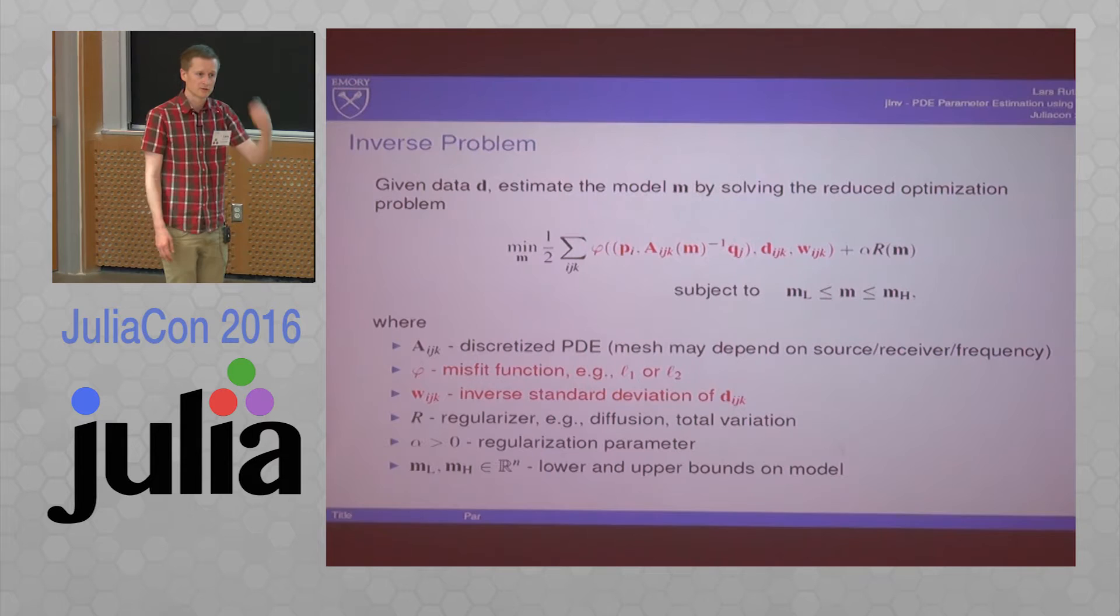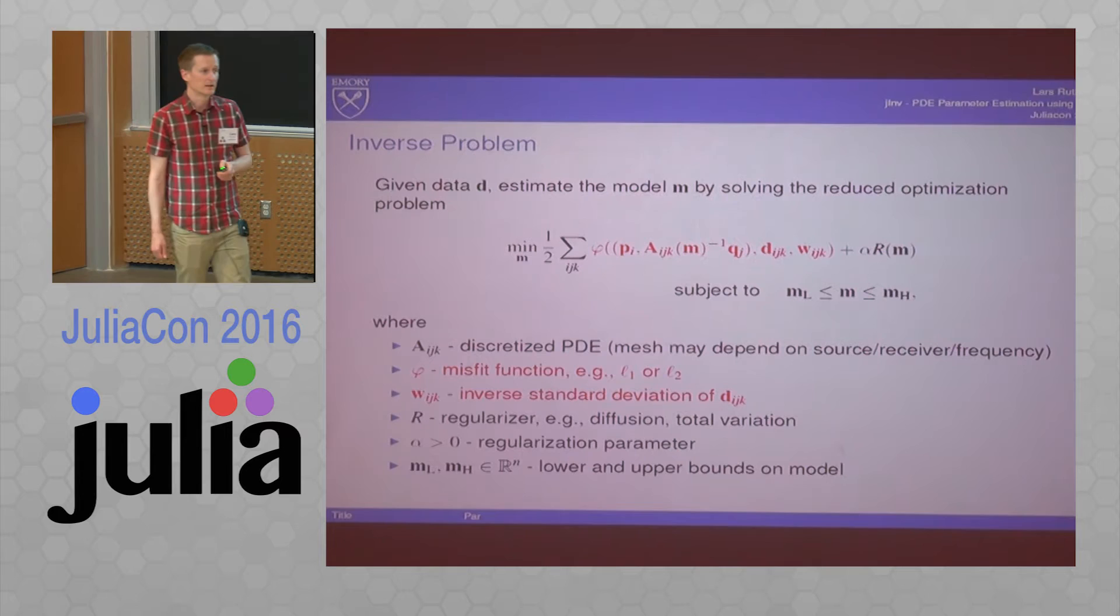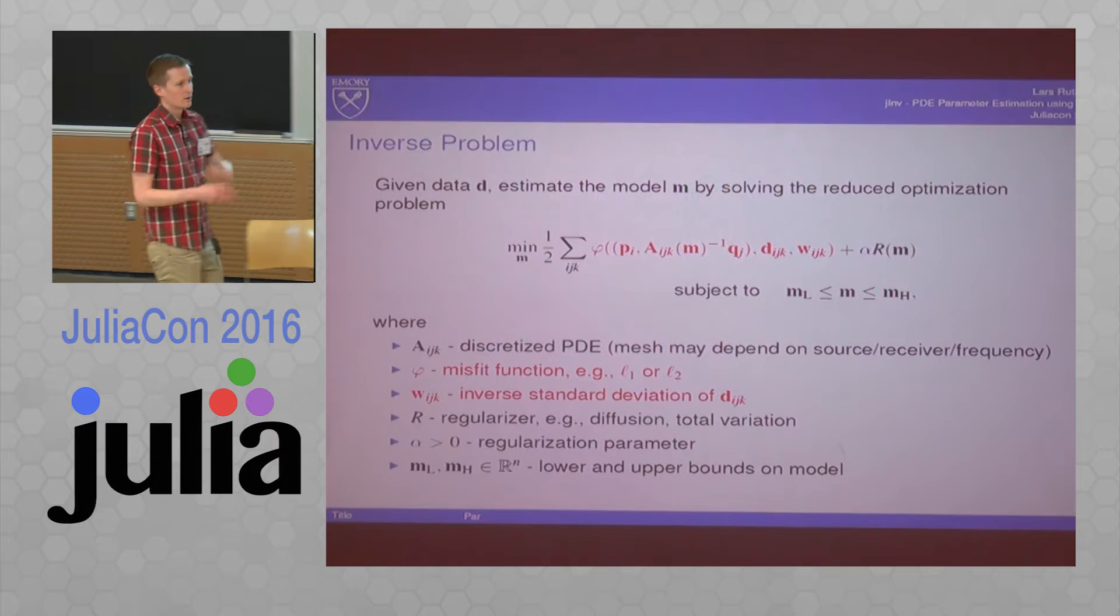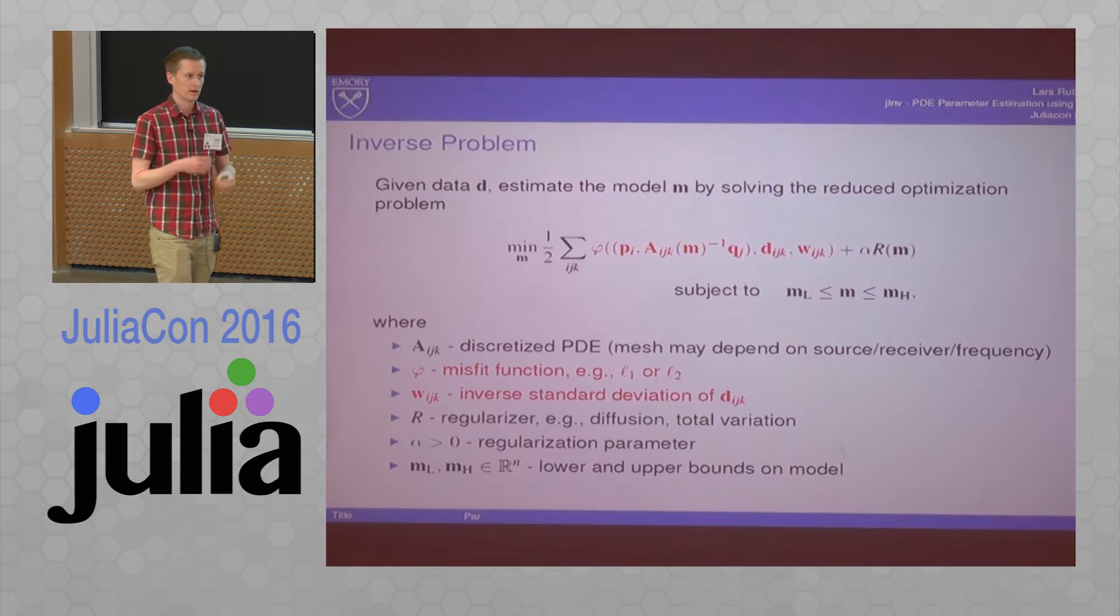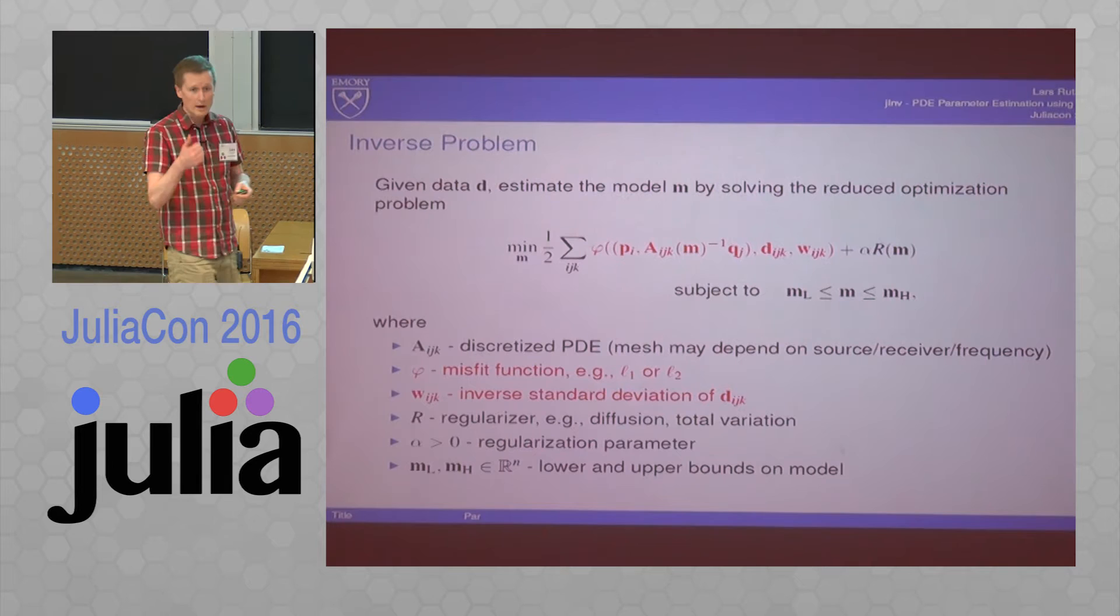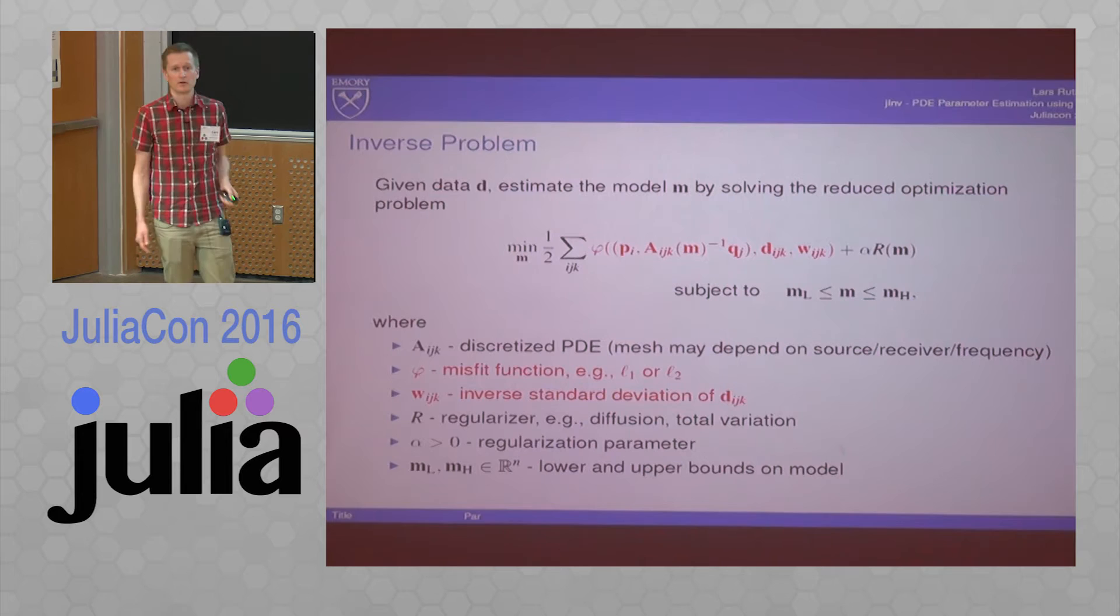I have the sub-index IJK in here. So what does that mean? We have receivers, sources, frequencies - that's three indices. We have tons of data, and we allow ourselves to use different meshes for each different combination to make the problem basically smaller. So we have not only one PDE to solve, but we have a ton of PDEs to solve. Here's the sum of all the PDEs.